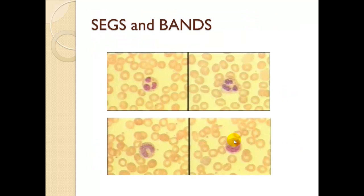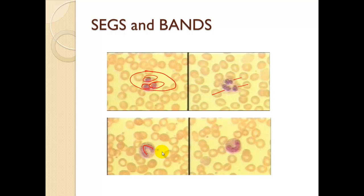Segs and bands relate to the left shift or right shift CBC. Segmented cells have segmented nuclei — these are mature white blood cells. Bands have all their nuclei banded together — these are immature white blood cells. If we see a lot of bands, we would think the patient's immune system is getting overwhelmed.